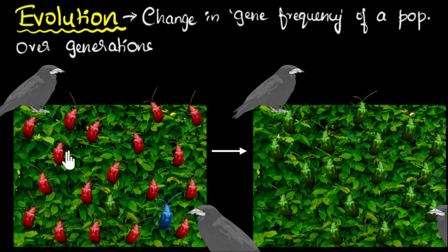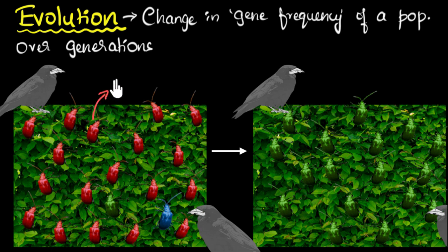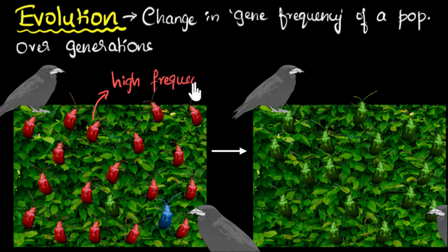Initially, the red colored beetles were more in number, which means the gene responsible for red color was more frequently seen in every generation — more frequently being passed on. So earlier, the genes responsible for red color had a higher frequency. That's the meaning of gene frequency: which genes do you more frequently see in every generation, which gets more passed along. So red was the majority initially, while green and blue were very much the minority.